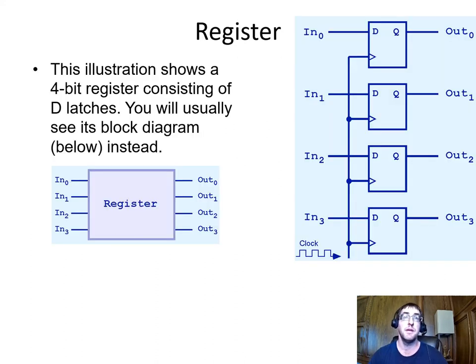So here is a simple 4-bit register built on a D latch or flip-flop. It's fairly straightforward. The clock signal is routed to every flip-flop in parallel, and each 1-bit input to the register is attached to one D flip-flop. The outputs of each flip-flop are arranged as the output of the register.